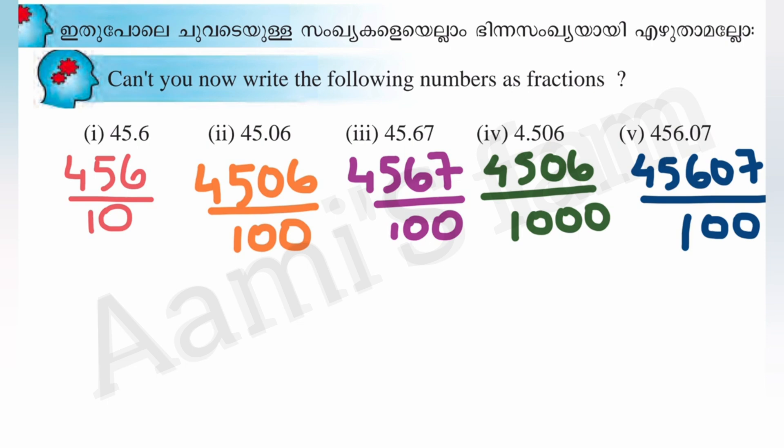Number one is 45.06. That number is 45.06. How many numbers are after the decimal point? That is .06 — two decimal places. Then 4506 by 100. This gives us 3.50.